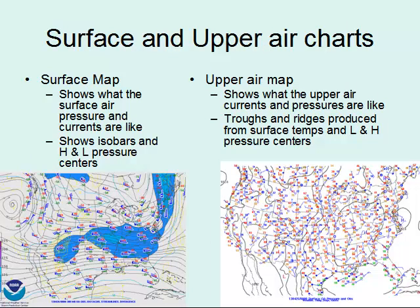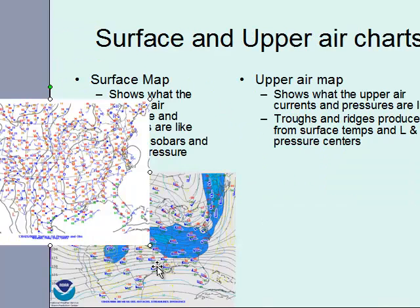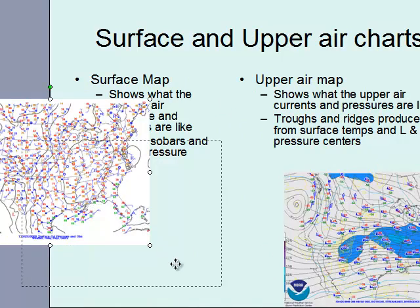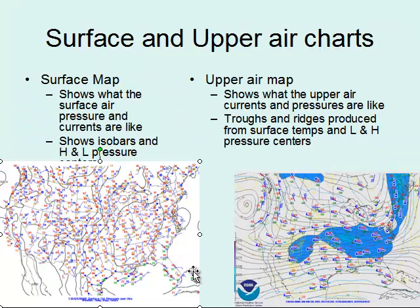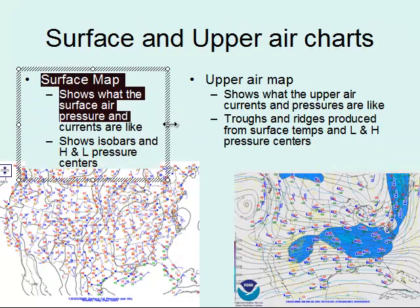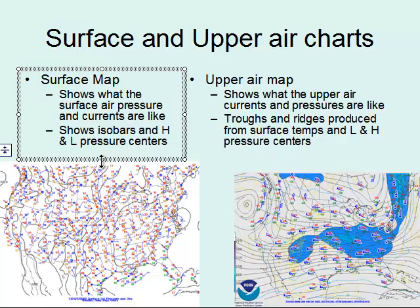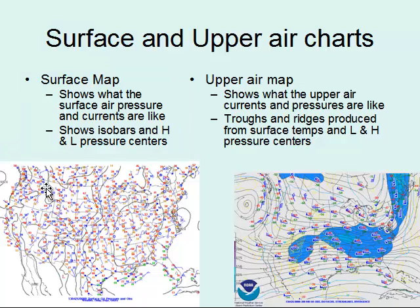The measurements of air pressure will actually tell you information about where high pressure and low pressure centers are. In the case of surface maps, these show what the surface air pressure is like and what the air currents are like — so it shows where the high and low pressure zones are.